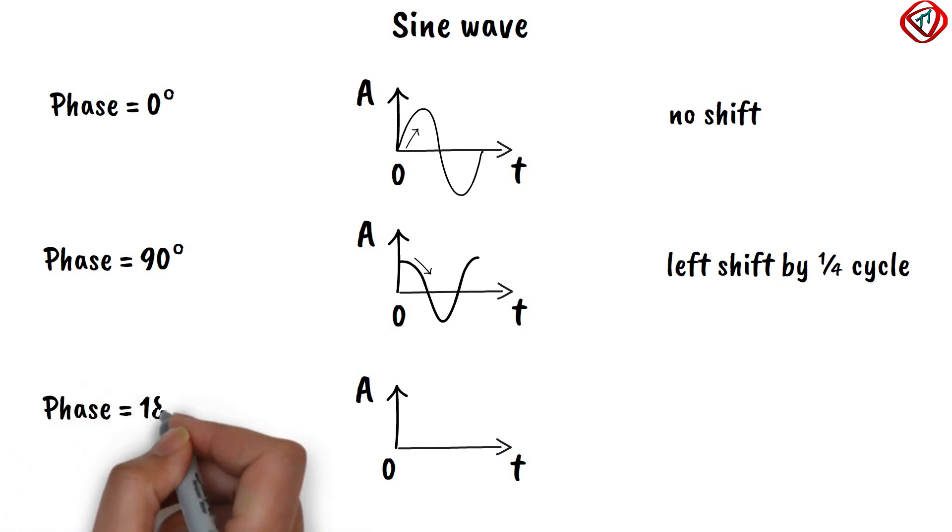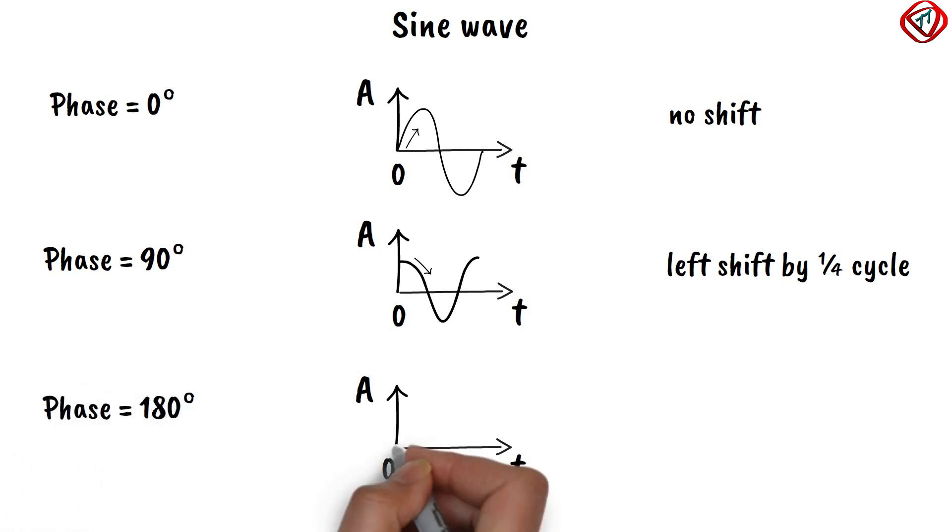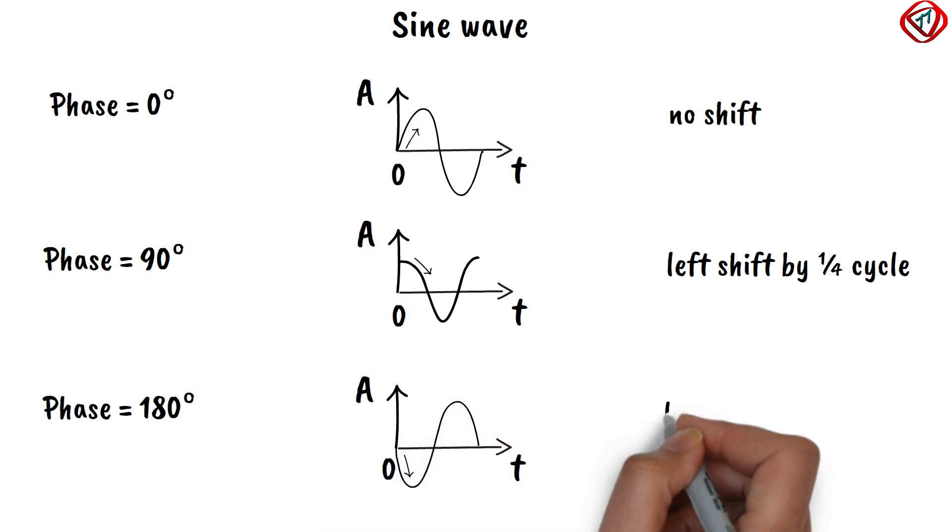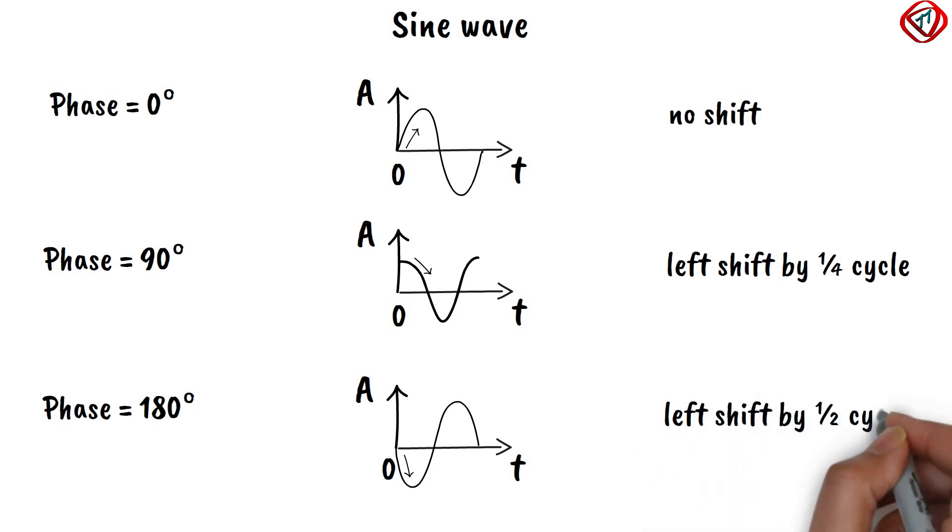If the phase is 180 degrees, then the sine wave starts with a zero amplitude and the amplitude is decreasing. It means the sine wave is shifted to left by half cycle.